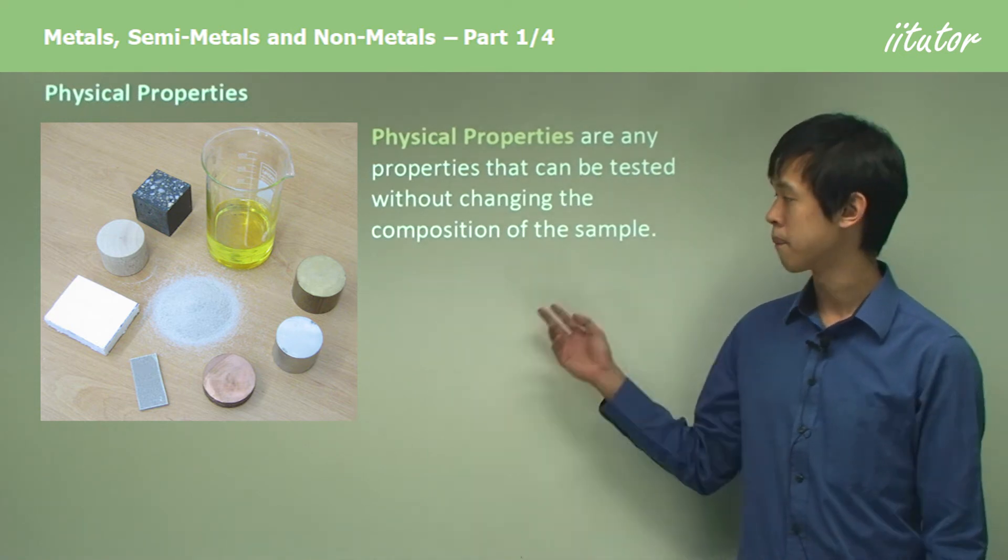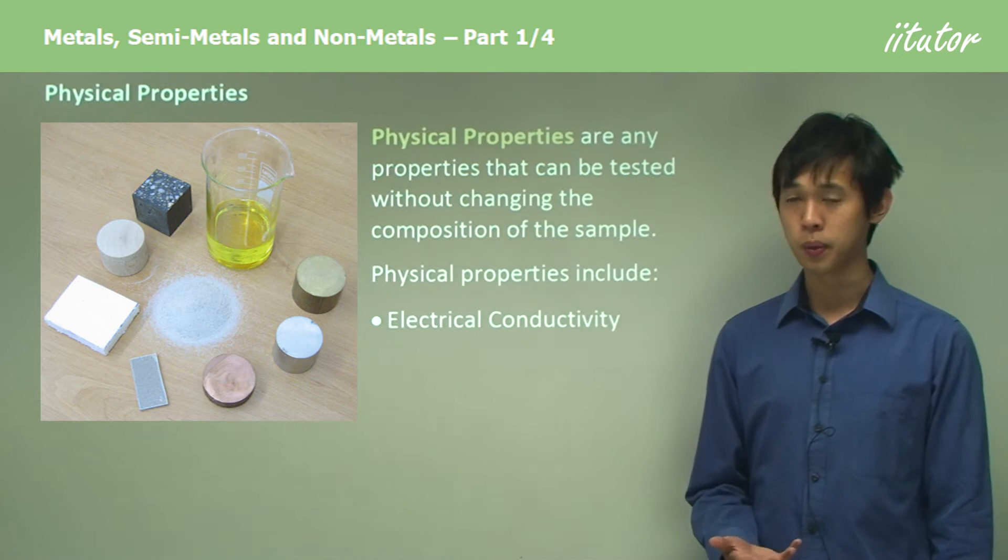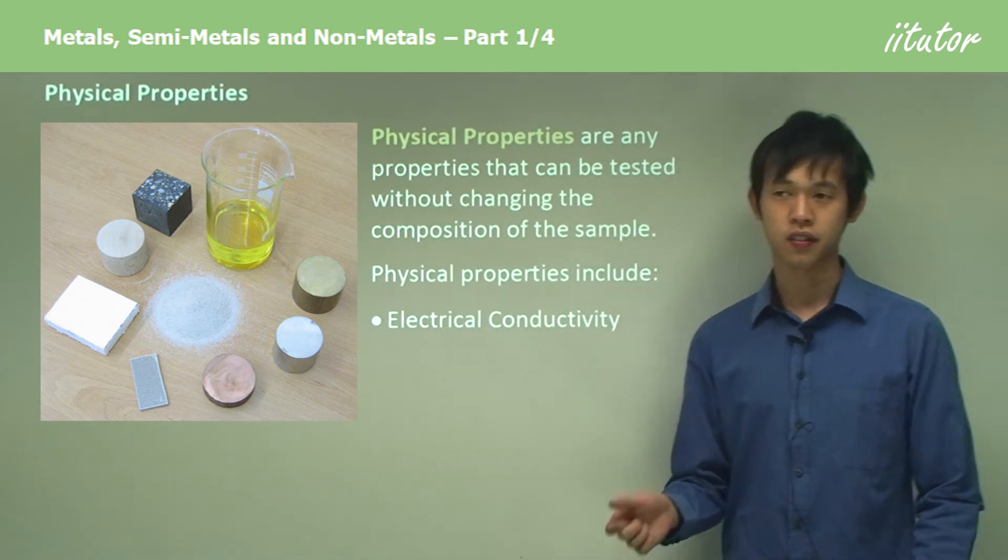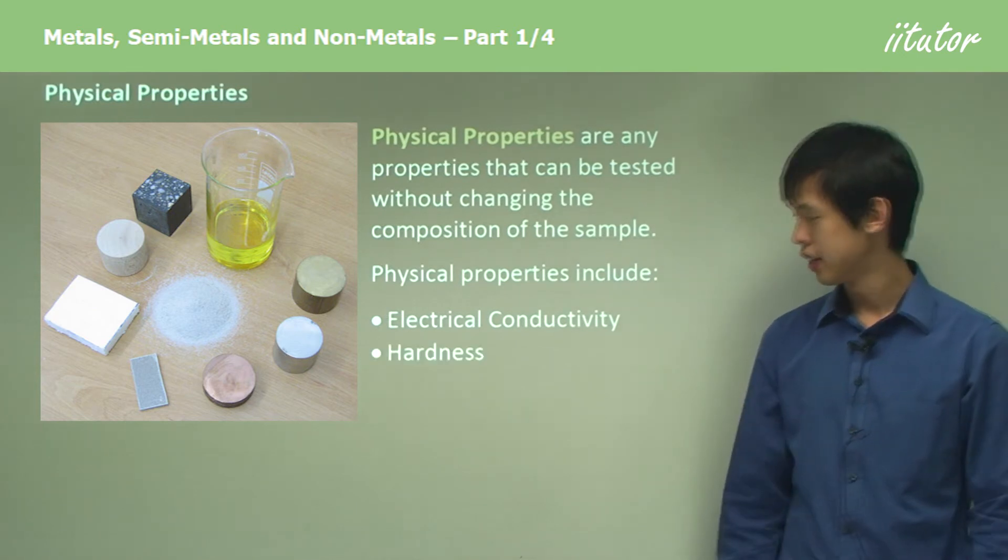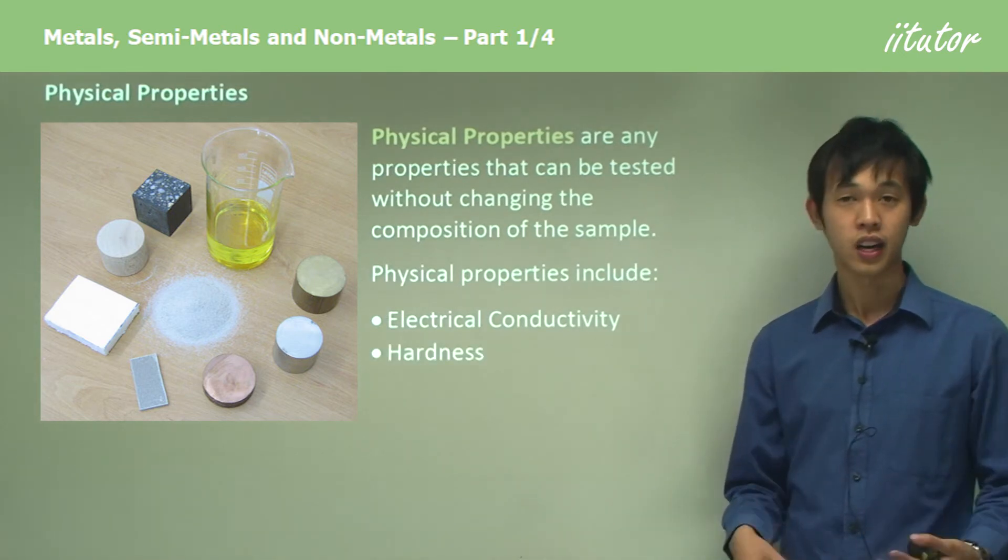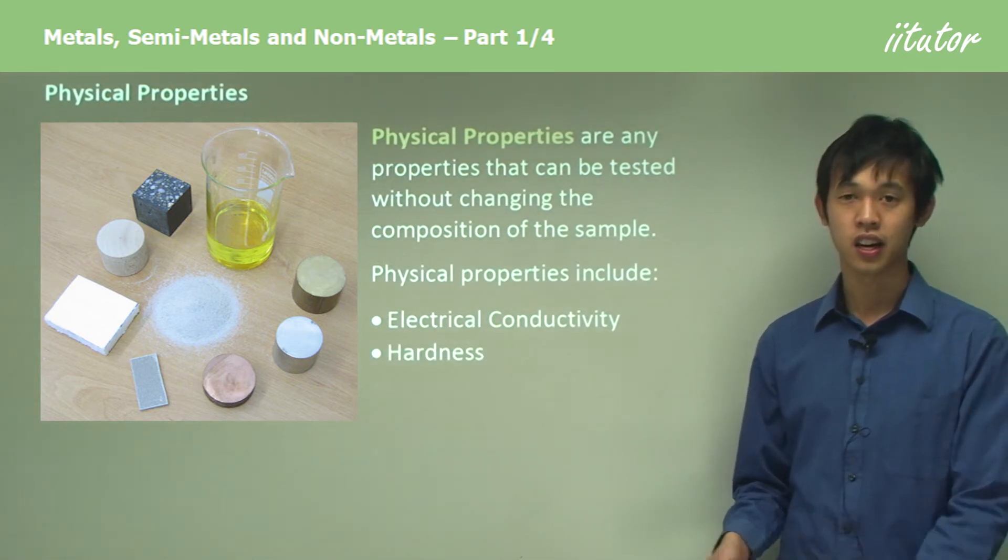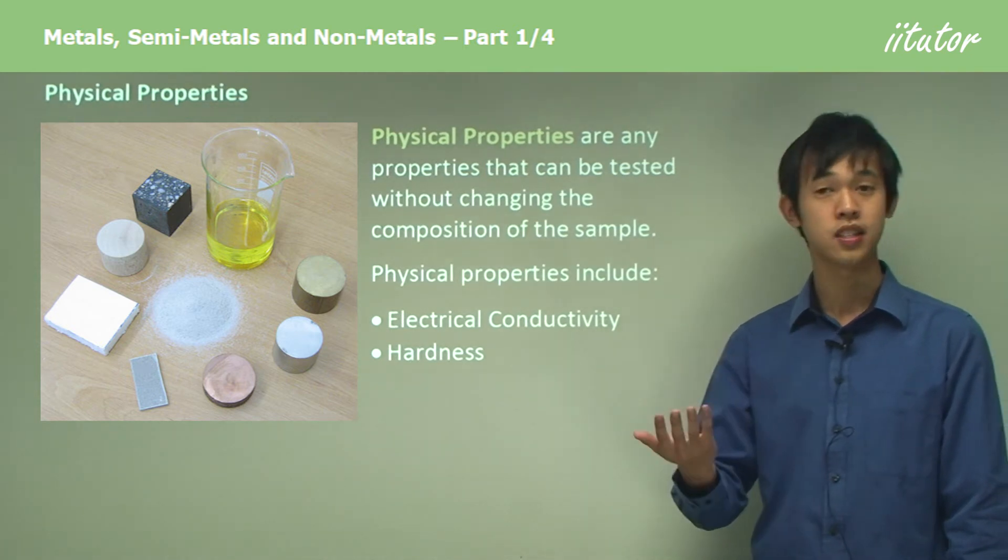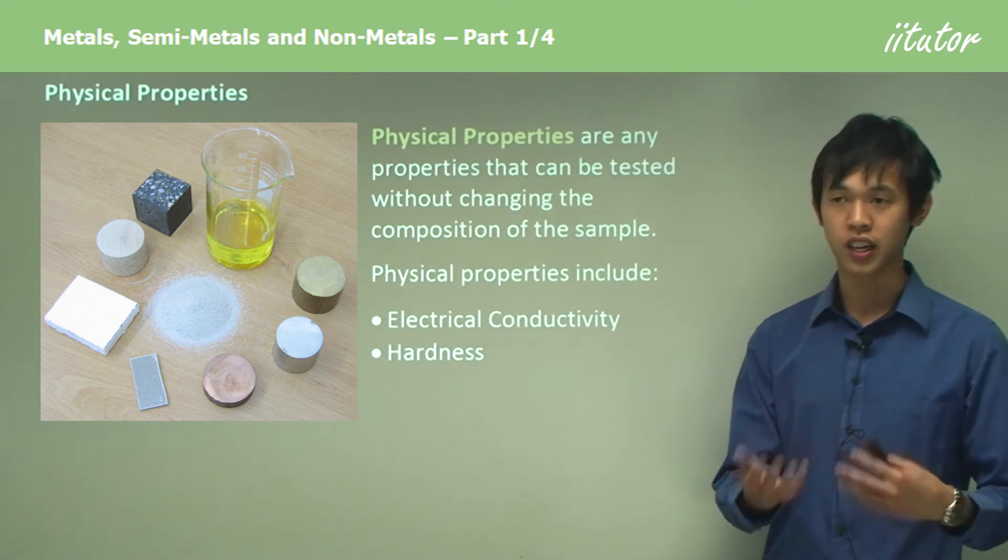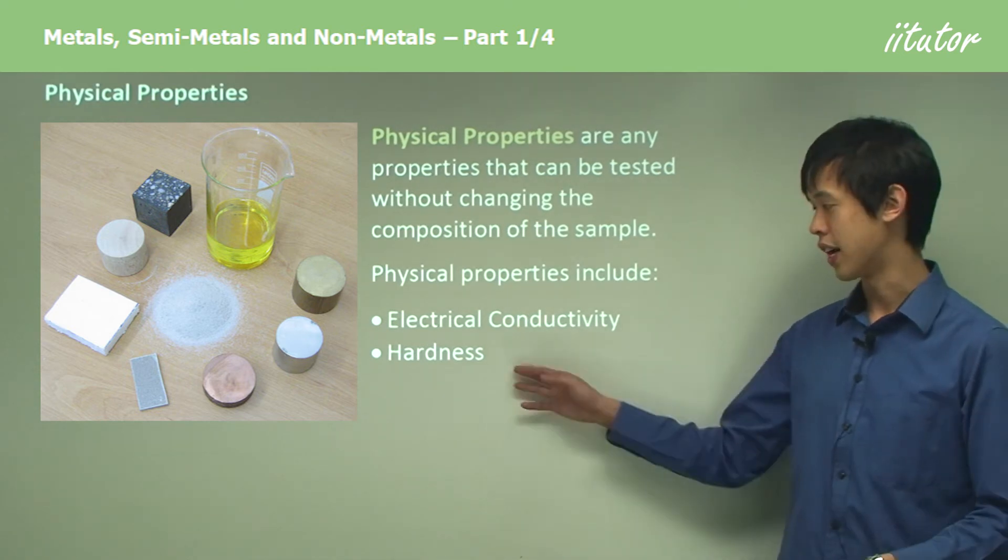Physical properties can include electrical conductivity. If I connected a battery to it, I could watch how much electricity goes through it. Hardness—if I had some kind of hardness scale, I could test how hard this piece of magnesium is. You see, none of these things are changing the fact that it's magnesium; we're just looking at what it can do in terms of how hard it is or how conductive it is.